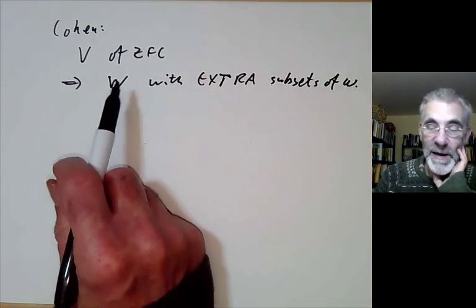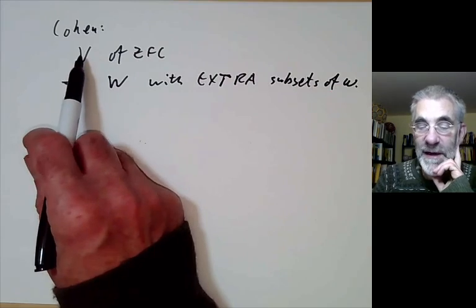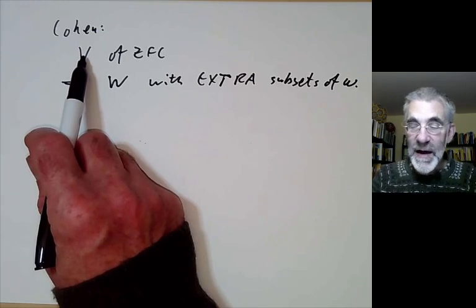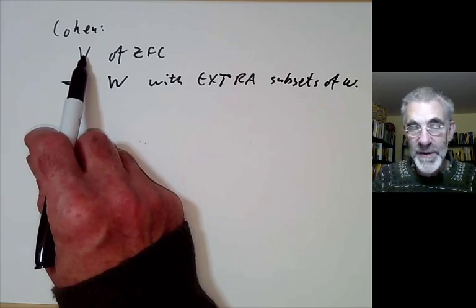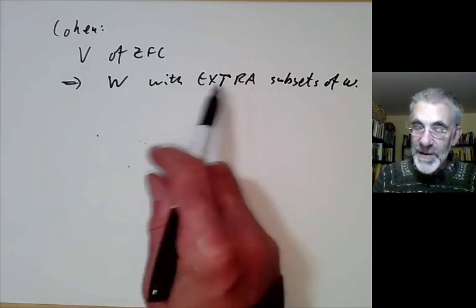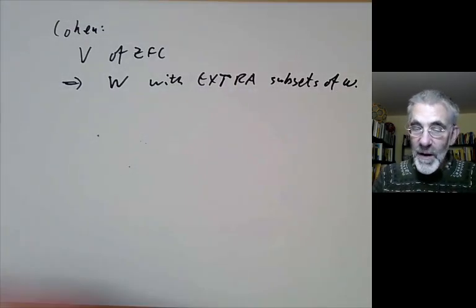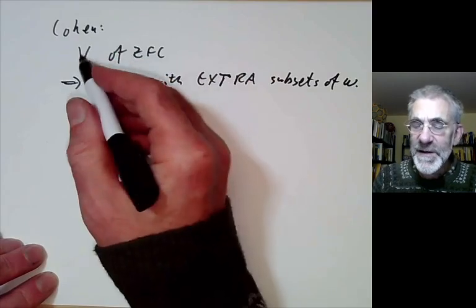And this seems to be a little bit odd because suppose we take V to be the you know platonic model where we've already included every possible subset of omega into it. How is it then possible to add even more subsets of omega because we've already got them all in? Well so there are various ways around this.